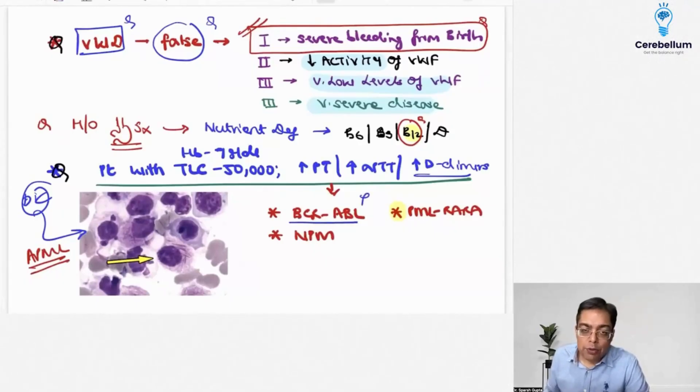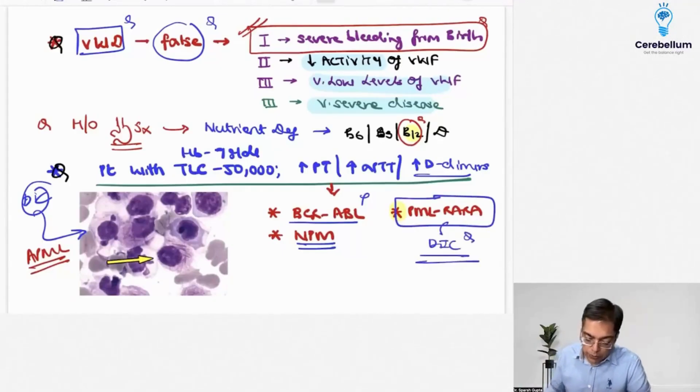It means CLL and ALL. NPM is something that you find in a patient having acute myeloid leukemia, but that is the one which is going to be having a specific genetic translocation. PML-RARA is the one that is going to be having a high risk of development of DIC. This is something that we need to be just having a recap.